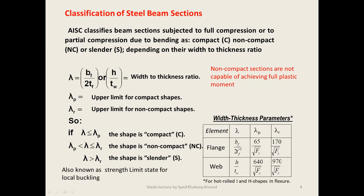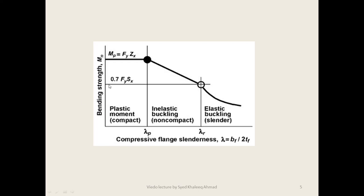If lambda is less than or equal to lambda_p, the section is compact. If lambda is between lambda_p and lambda_r, the shape is non-compact. If lambda is greater than lambda_r, the shape is slender. This is also known as the strength limit state or local buckling criteria. On the graph, when lambda is less than lambda_p, the nominal moment equals Mp (plastic moment), given by Fy times Zx. Between lambda_p and lambda_r there is inelastic buckling; beyond lambda_r there is elastic buckling, representing the slender section.